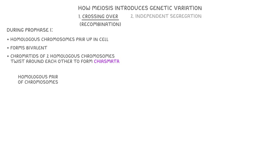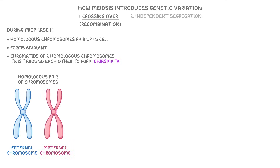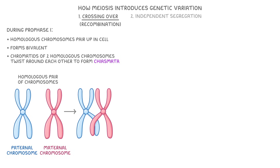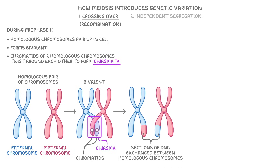To lay this out step by step, a homologous pair of chromosomes would be a paternal chromosome from your father and the maternal chromosome from your mother. These would then pair up and form a bivalent, and their chromatids would twist around each other, forming a chiasma. Chiasmata is just the word for multiple chiasma. Then at these chiasmata, sections of DNA are exchanged between the homologous chromosomes in the bivalent, shuffling the alleles between them, meaning that an allele originally on the paternal chromosome might end up on a maternal chromosome instead.